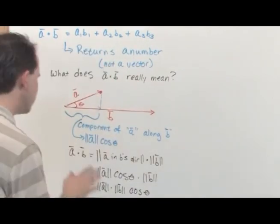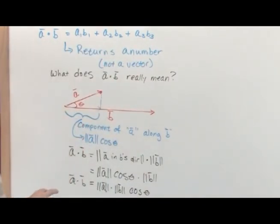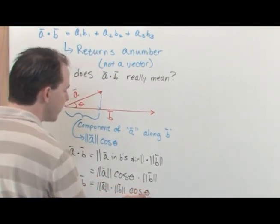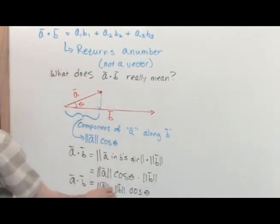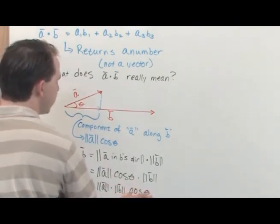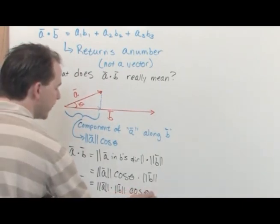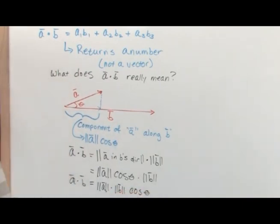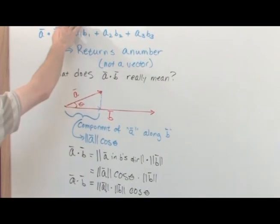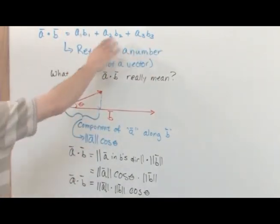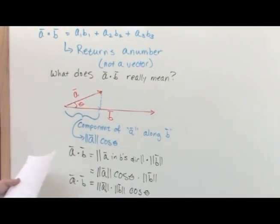So the main thing to pull from this: there are two ways to write the dot product. First, magnitude of a times magnitude of b times cosθ — use this when you know the lengths and the angle. Second, multiply the components and add them together — use this when you know the component form. Both give you the exact same number, and now you know how to calculate the dot product.